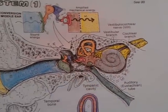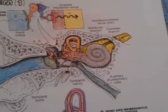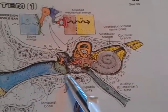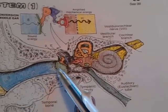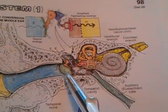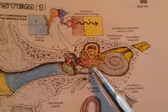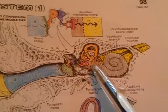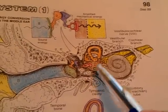The tympanic cavity has six walls. The lateral wall is called the membranous wall, formed by the tympanic membrane. The medial wall is called the labyrinth wall. It separates the middle ear from the internal ear.